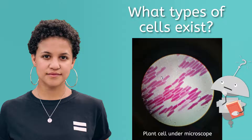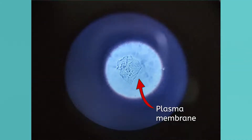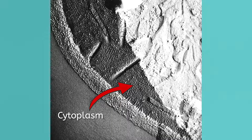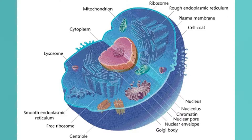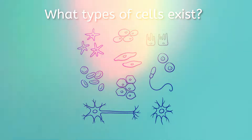So far, we've unpacked that cells are the basic unit of all life, and that all cells contain a protective plasma membrane, identifying DNA, a jelly cytoplasm, and builder ribosomes. But we also know that there are lots of different cells in our universe. What makes a cell different? Our jumping off question for today is: what types of cells exist?